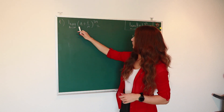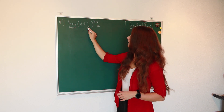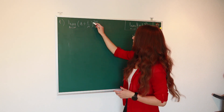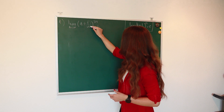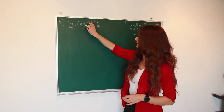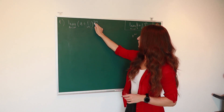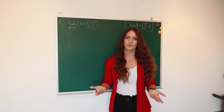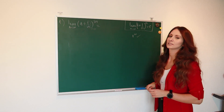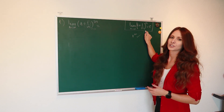Our first example is the limit when n approaches infinity of 1 plus 1 over n raised to the power of 3n. The first step is to plug in infinity and verify that this expression is our indeterminate form 1 raised to the infinity power. So 1 over n — if n is infinity, 1 over an extremely large number means this fraction approaches 0. So we have 1 plus 0, raised to 3 times infinity, and 3 times infinity is also infinity. That means we have our indeterminate form 1 raised to the infinity power.